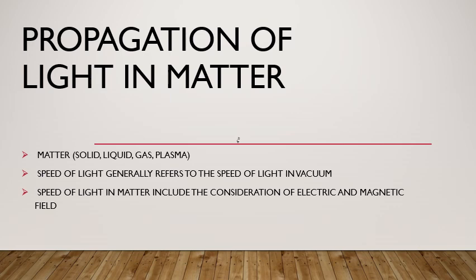آج ہم دیکھیں گے کہ یہ جو light wave ہے — اس chapter کا second topic — propagation of light، مطلب light ایک جگہ سے دوسری جگہ کس طریقے سے جاتی ہے۔ جب ہم light wave کو discuss کرتے ہیں تو عموماً vacuum میں discuss کرتے ہیں، لیکن آج ہم اسے matter میں discuss کریں گے کہ matter میں propagation کیسے ہوتی ہے۔